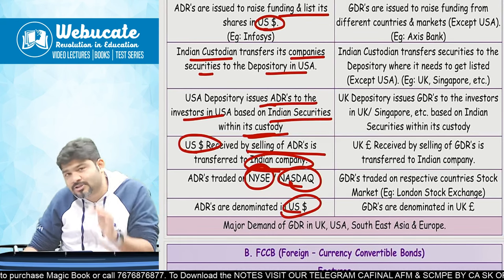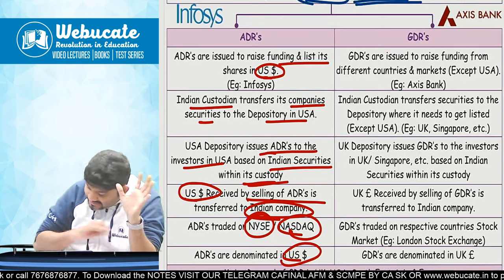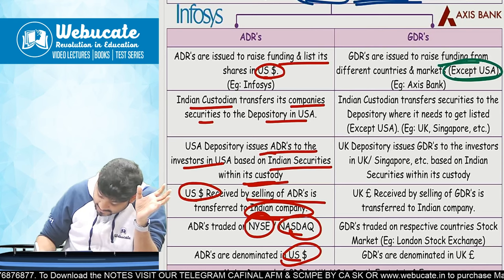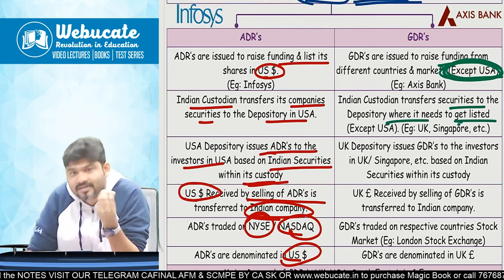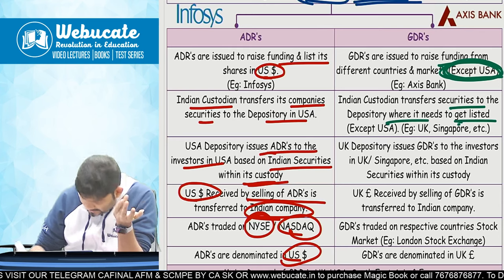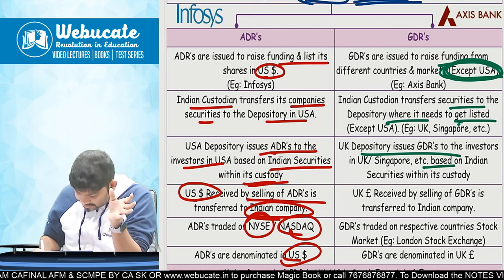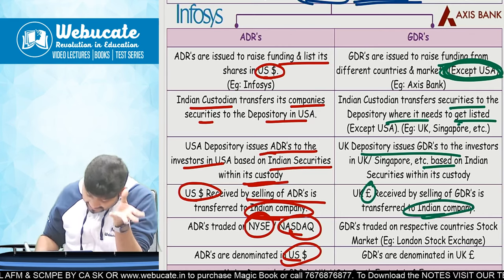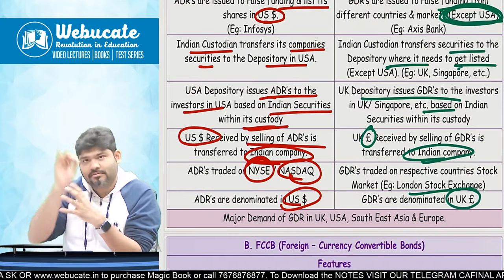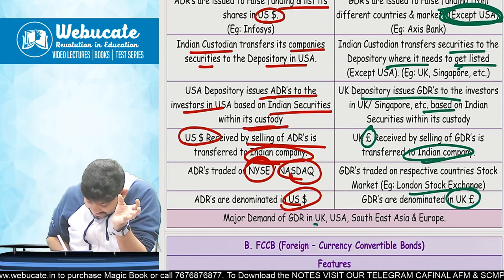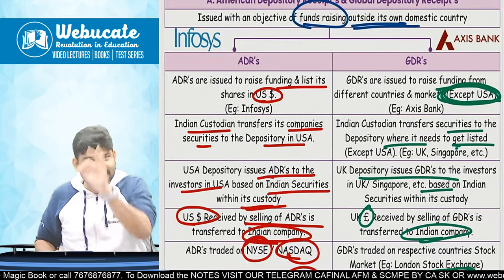The USA depository issues ADRs to US investors based on Indian securities within its custody. US dollars received from selling ADRs are transferred to the Indian company. ADRs are traded on the New York Stock Exchange or NASDAQ and are denominated in US dollars. For GDR: same process, but raise funds outside USA. Indian custodian offers its securities to the depository where it needs to get listed — say UK or Singapore. The GDR denomination depends on the country of listing, with major demand in UK, USA, Southeast Asia, and Europe.